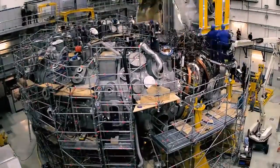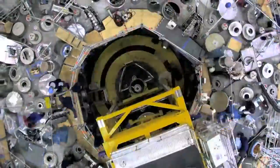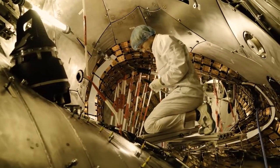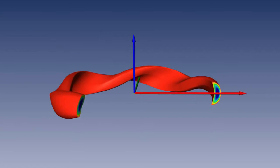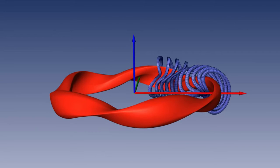Like the more familiar tokamak reactors, stellarators hold super-hot gas in a cage of powerful magnetic fields. Wendelstein 7X has been optimized by a supercomputer to produce the best possible magnetic cage.